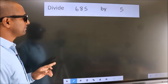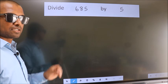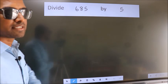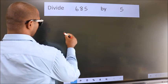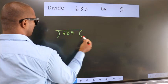Divide 685 by 5. To do this division, we should frame it in this way. 685 here. 5 here.